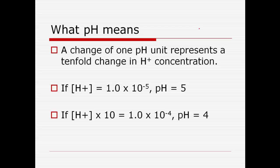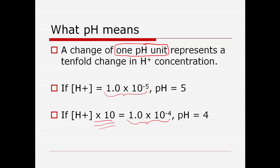Another thing to understand about pH is what it really means. A change of one pH unit — going from a pH of 5 to 4, for example — represents a tenfold change in hydrogen concentration. So if we have 1 times 10 to the negative fifth and we multiply that by 10, we get 1 times 10 to the negative fourth, and the pH only changes by one unit. If you multiply the hydrogen concentration by 10, the pH only goes down by one unit.